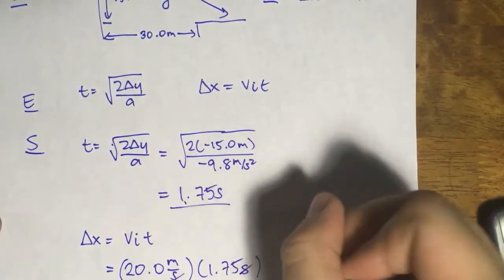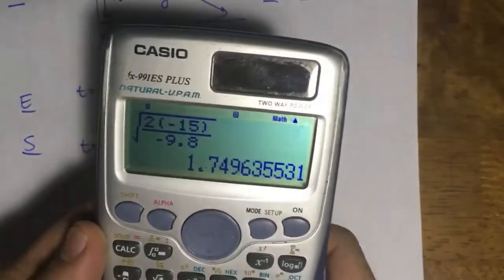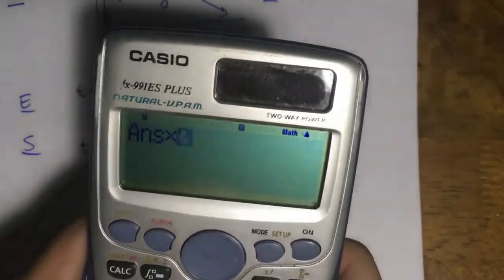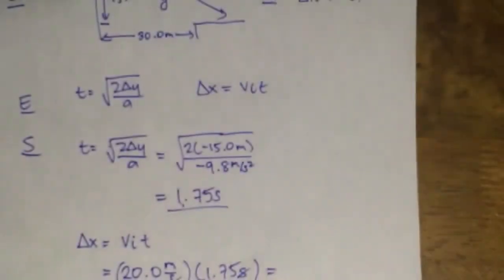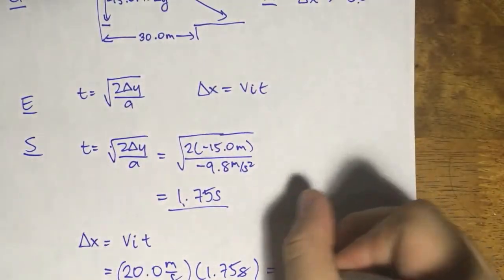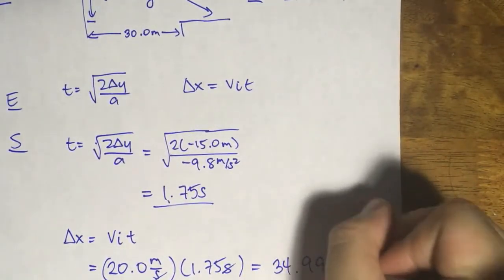The seconds will cancel out, which will then give you meters. But let's solve. So this one times 20 gives me the value of 34.99. So 34.99 meters.